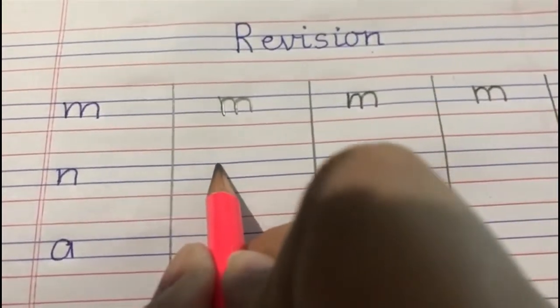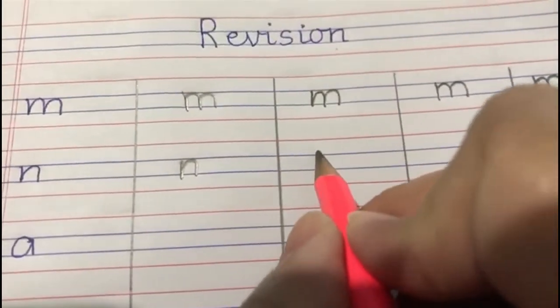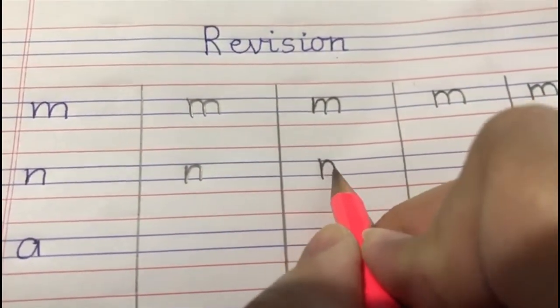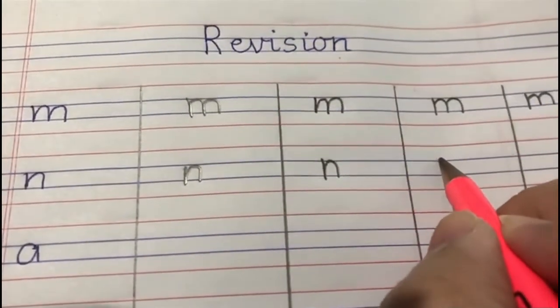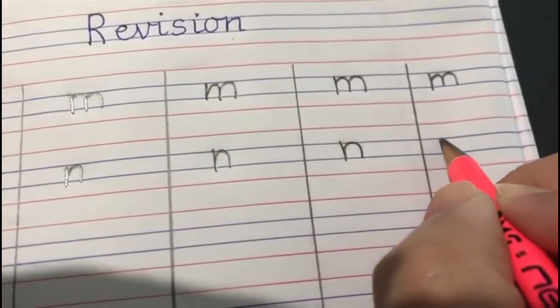Now, letter n. Up to down, and one bumpity, n. Up to down, one bumpity. Up to down, one bumpity, n. Up to down, one bumpity, n. N says n. N says n.